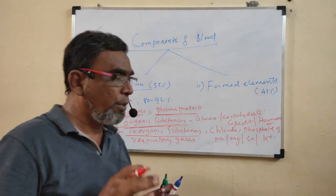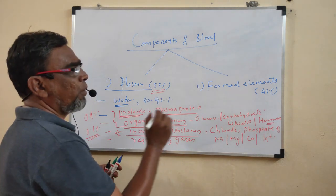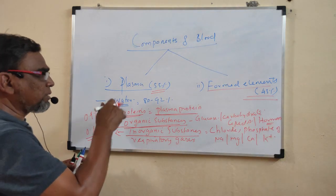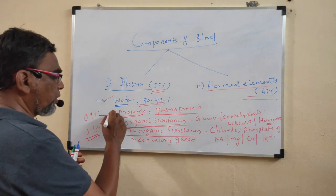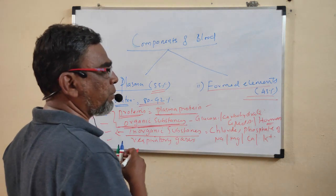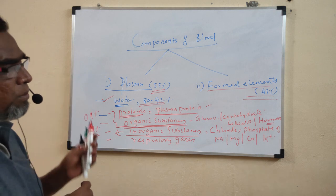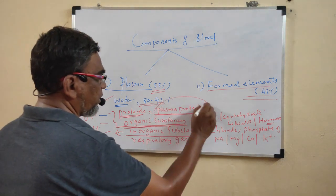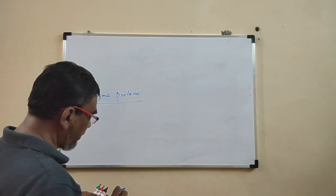So once again, you will realize that components of blood has two major components. One is called plasma, that is 55% present. One is called formed elements, that is 45% present. First of all, you will see the plasma. So what are the substances present in plasma? Mainly it is water, made up of water, 80 to 92%. So next one is the proteins, and these proteins are called plasma proteins. Organic substances also present, especially glucose, carbohydrates, lipids, and hormones. Inorganic substances, example, chloride, phosphates, sodium, magnesium, calcium, and potassium. Apart from that, respiratory gases also present. We will discuss now.